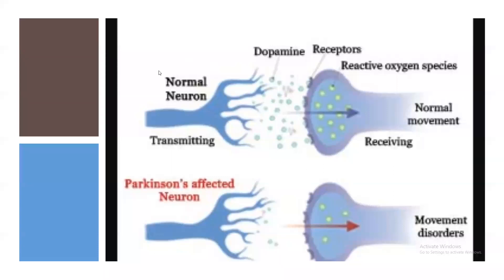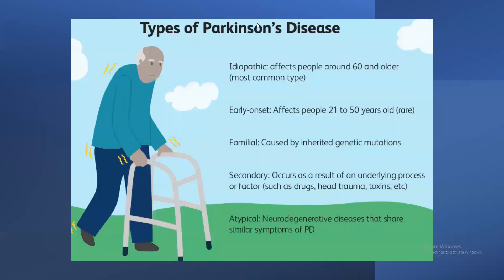In a normal neuron, dopamine is transmitted across the synapse. In Parkinson's disease, there is a loss of dopamine — dopamine is not reaching the synaptic gap, so movement disorder occurs. Types of Parkinson's include: idiopathic (most common, affects people around 60 and older), early onset (ages 21–50), familial (caused by inherited genetic mutations), secondary (resulting from drugs, head trauma, or toxins), and atypical (neurodegenerative diseases sharing similar symptoms).